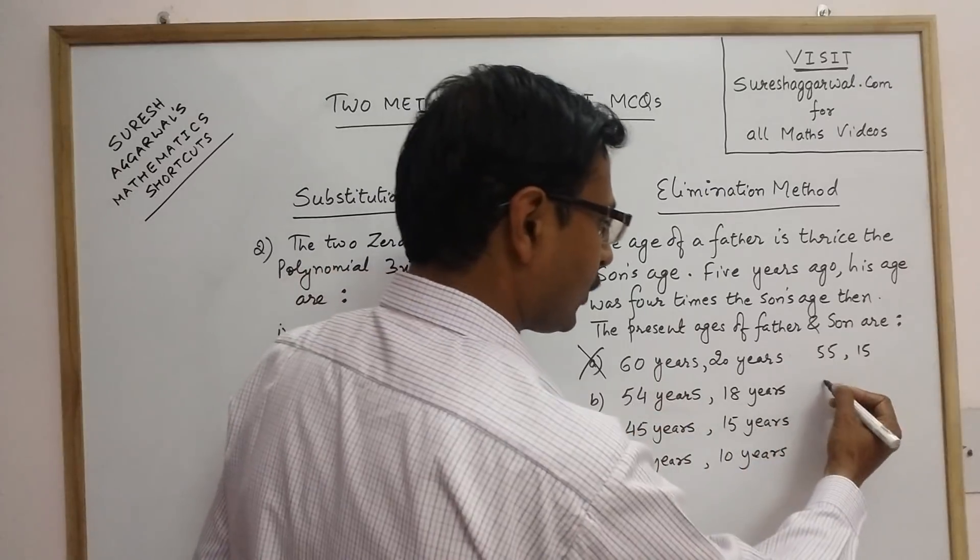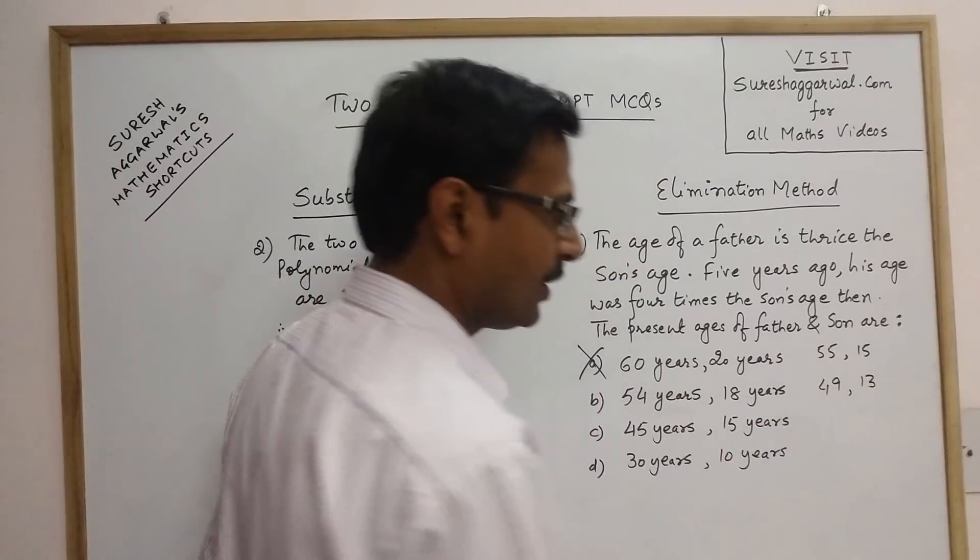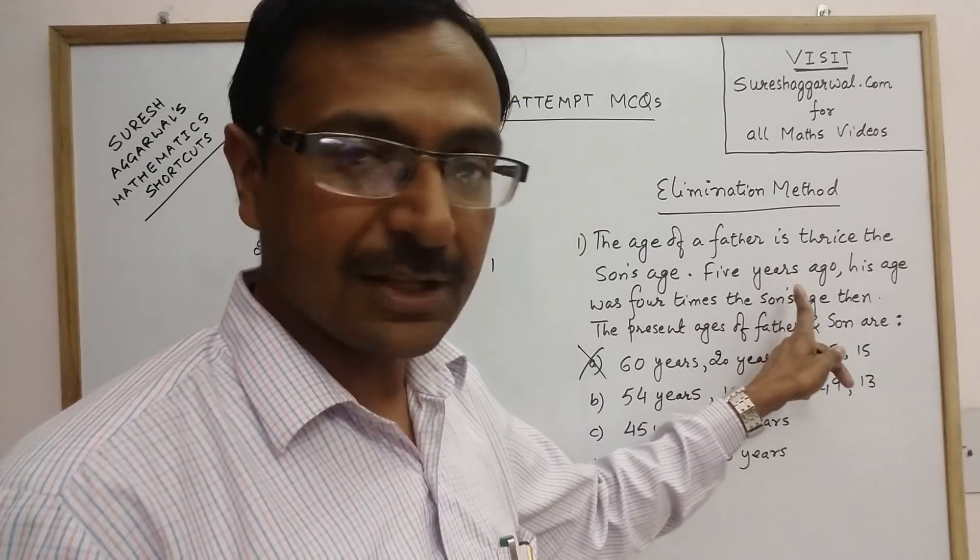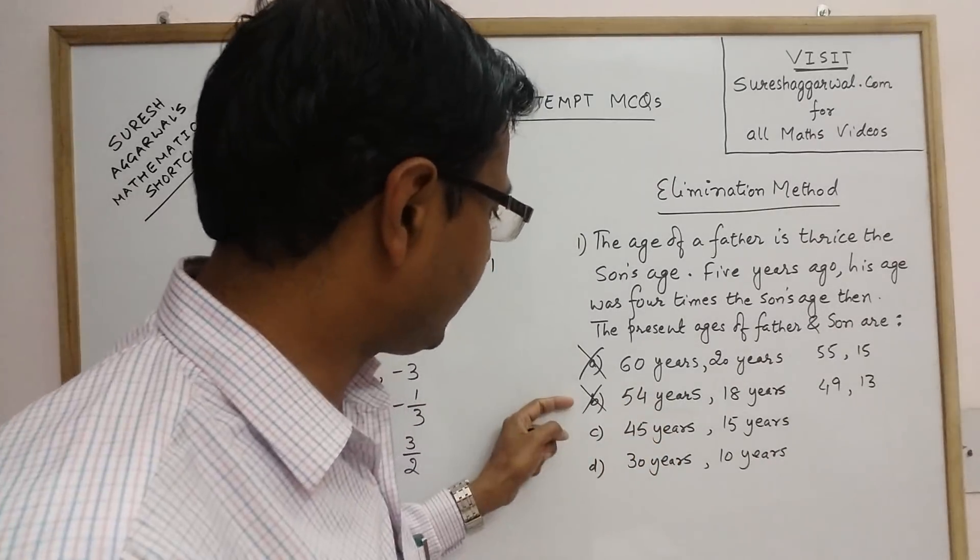Now, five years back this is 49 and five years back this is 13. So, again 49 is not four times 13 as given in the question. So, elimination of the second option takes place here.